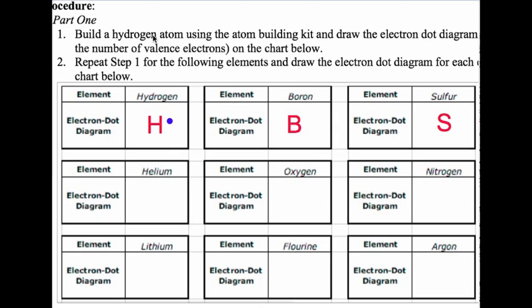Boron is atomic number five. It has five protons and five electrons to be neutral. Of those five electrons, two are in the first shell and three are in the second shell. So the valence shell has three electrons, and we put three dots.